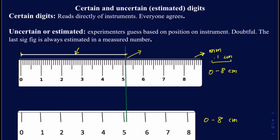The second ruler doesn't have those small markings, so it only measures whole centimeters and cannot measure millimeters or tenths of centimeters. When reading from the first ruler, I know the line is after 5. Since this ruler can measure to the first decimal place, you can clearly see — and everyone will agree — that the green line is right after the very first small marking after 5, so it's clearly 5.1. This 0.1 is coming directly from the instrument, so everyone agrees on it — both 5 and 1 are certain digits.